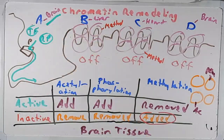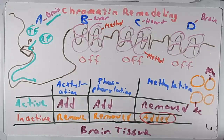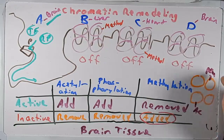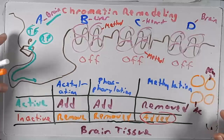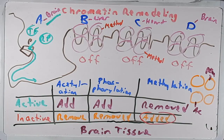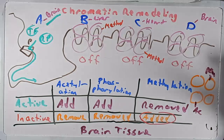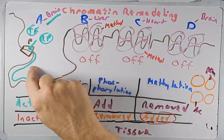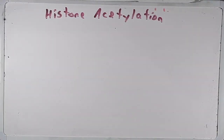The big take-home point of chromatin remodeling is that by adding chemicals to the histones, we change the ability of those histones to bind to DNA, which then affects the relative ease or difficulty in transcribing the genes associated with those nucleosome areas. Now I want to spend a little bit more time talking about histone acetylation, and in doing so I want to talk about two enzymes.